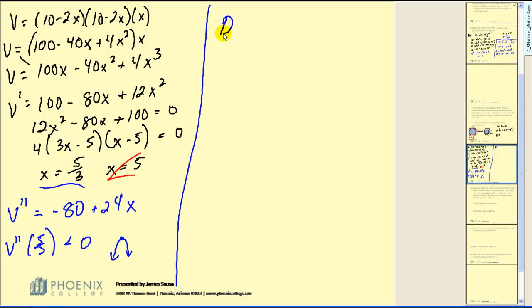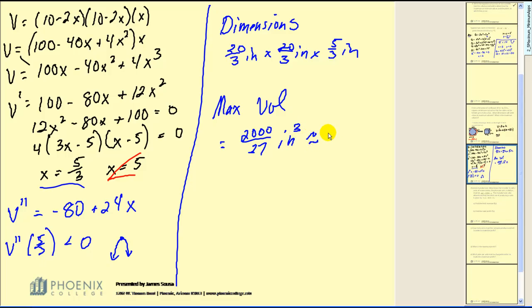So the question asks for the dimensions of maximum volume. And remember, the dimensions were 10 minus 2x by 10 minus 2x by x. Replacing x with 5 thirds here would give us 20 thirds by 20 thirds inches by 5 thirds inches. These are the dimensions that would maximize the volume. And the maximum volume, of course, would equal the product, 2,000 divided by 27 inches cubed. Which is approximately 74.08.